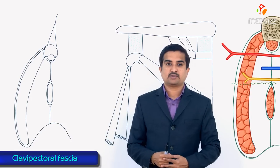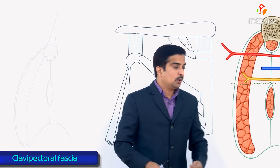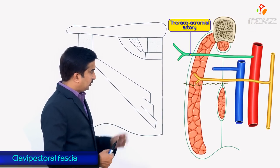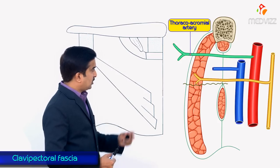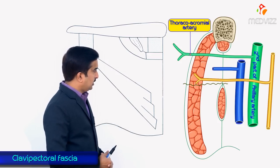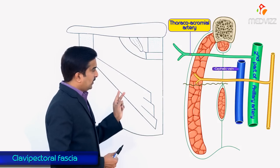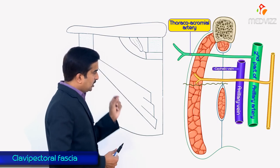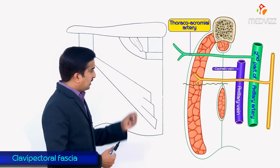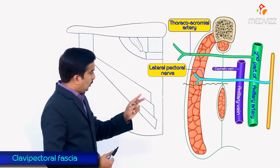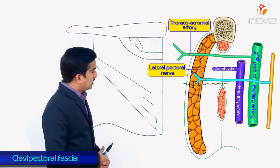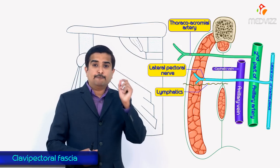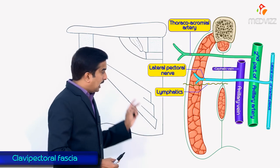The structures piercing the clavipectoral fascia are: first, the thoracoacromial artery, which is a branch of the second part of the axillary artery; second, the cephalic vein, which pierces the fascia to drain into the axillary vein; third, the lateral pectoral nerve, which innervates the pectoralis major muscle and is a direct branch of the lateral cord of the brachial plexus; and fourth, lymphatics from the breast to the apical group of axillary lymph nodes.